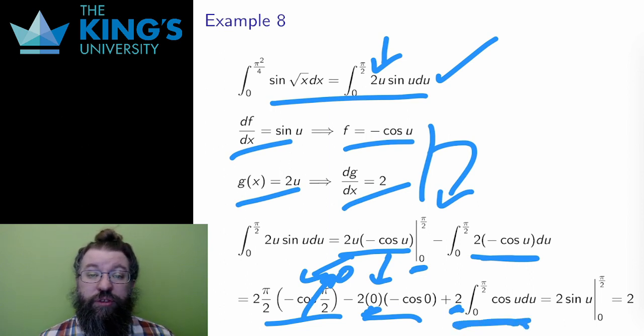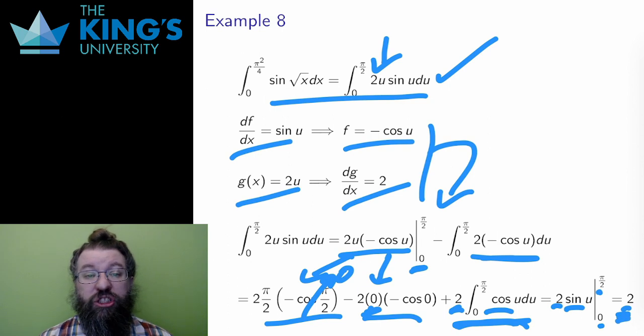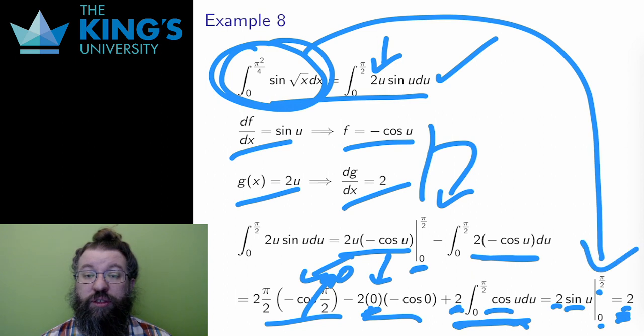The antiderivative of cos is sine, and evaluated from pi over two to zero is just one, and then multiplied by two gives a final answer of two. The original area under the original curve, found by a combination of u-substitution that creates an integral and integration by parts, is in fact two.